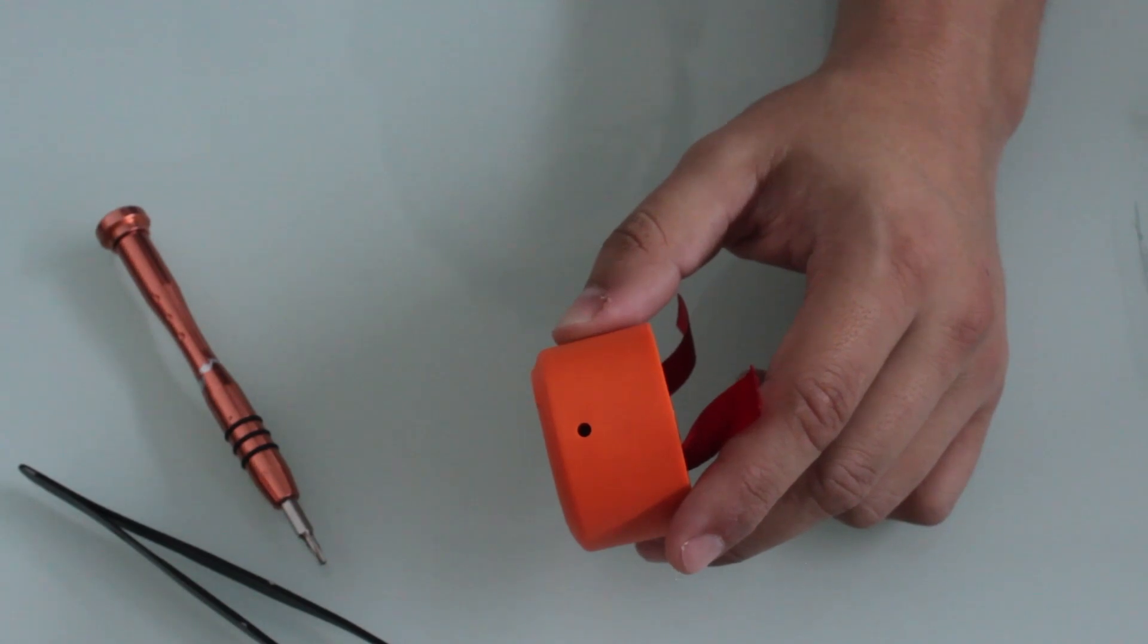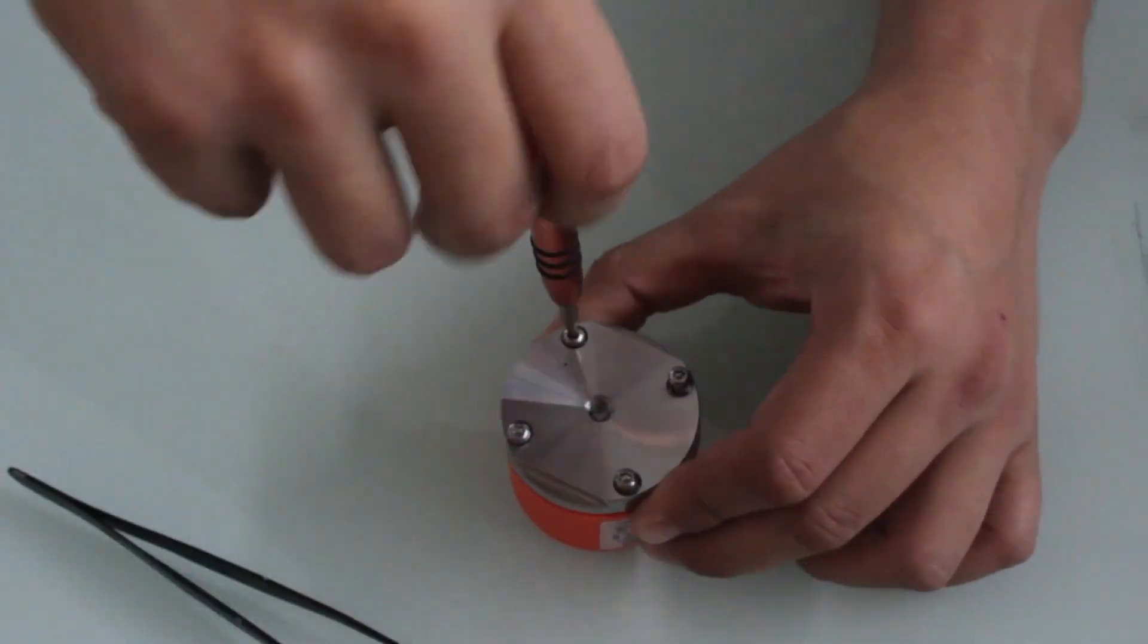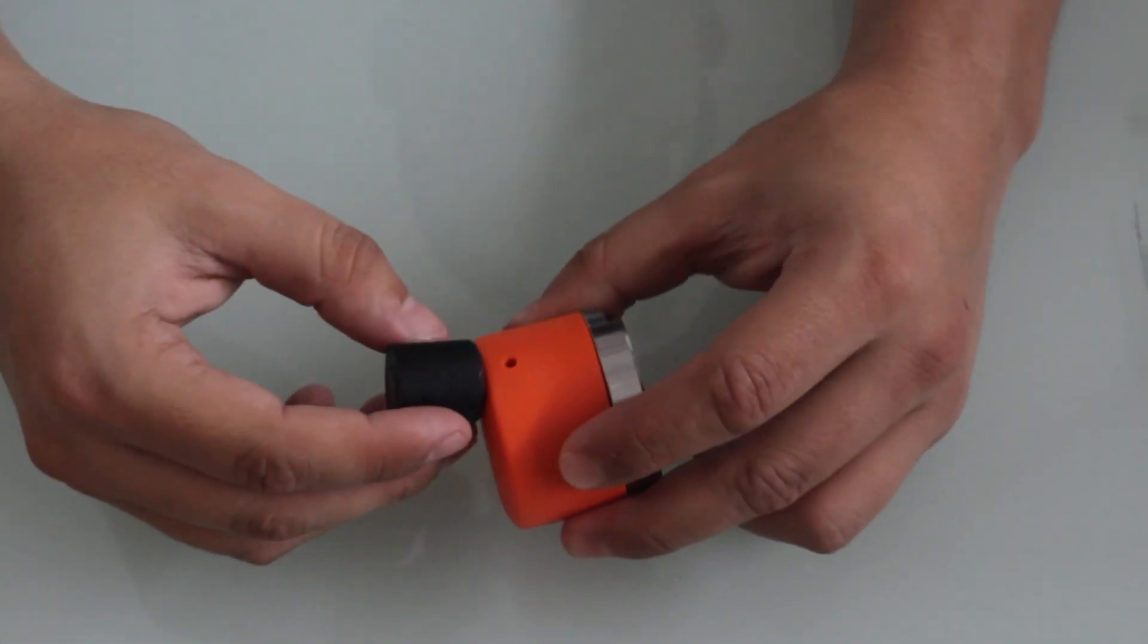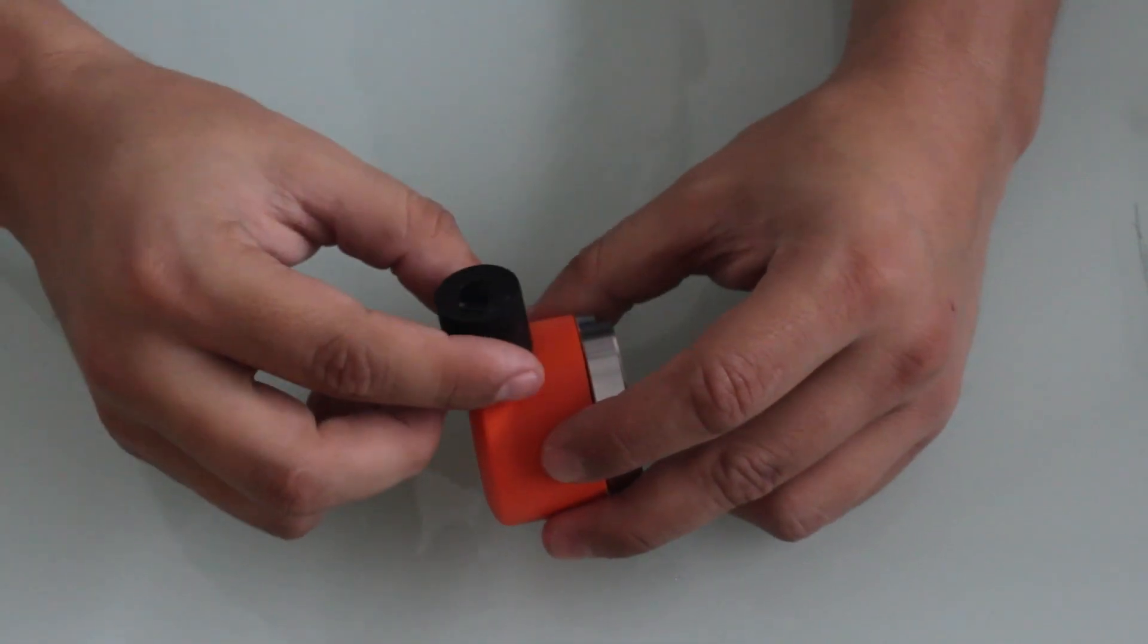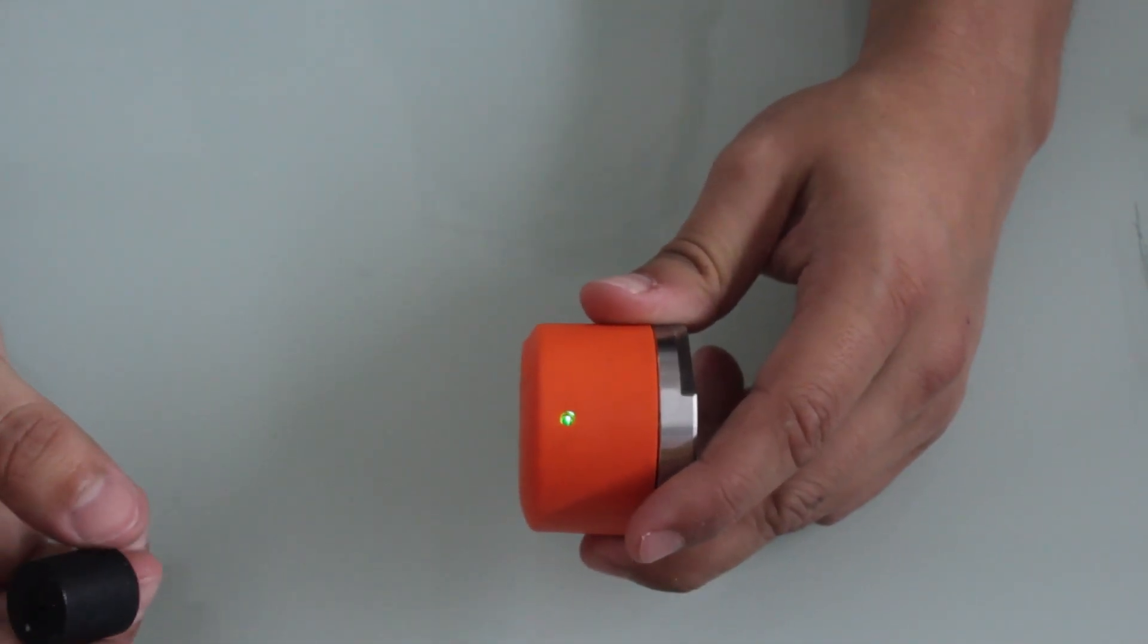So now we put the cover back on the Phantom. Once we close it, we are going to check one more time if the sensor is resetting with the magnetic key. Just to check that everything is in order.